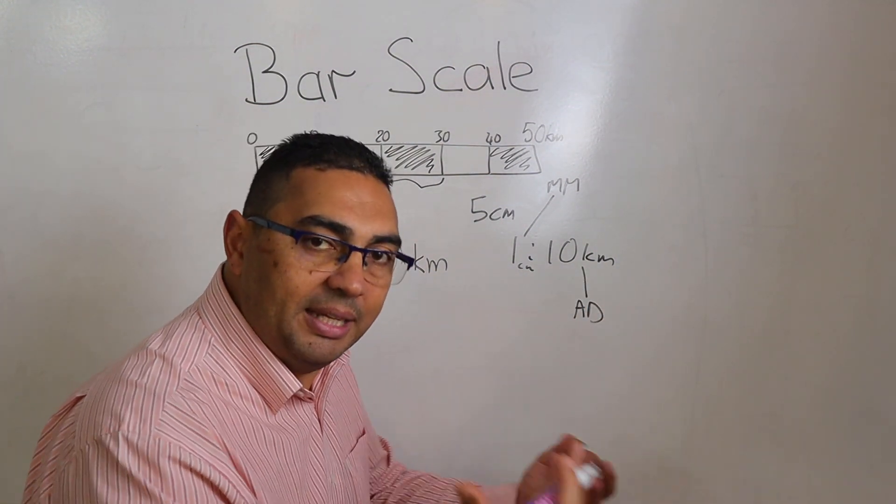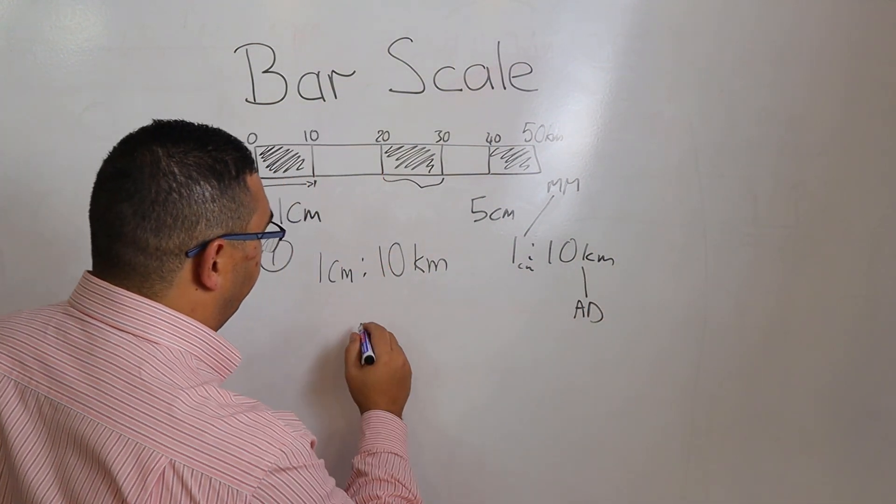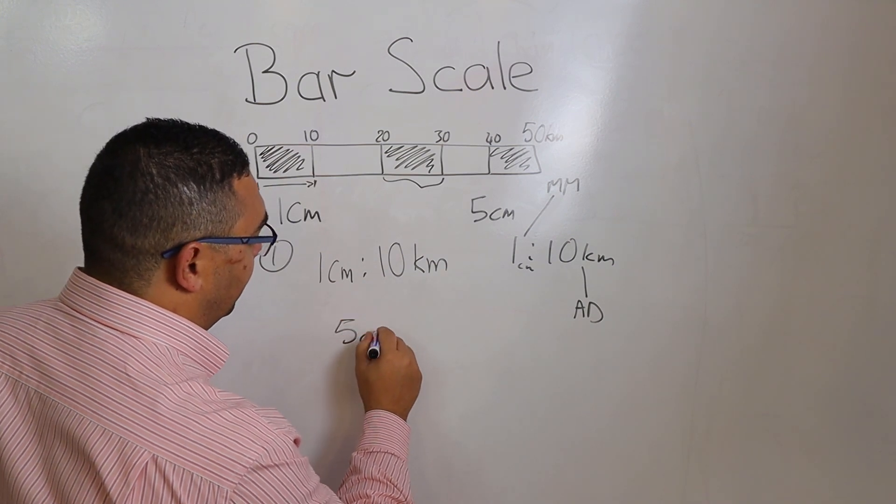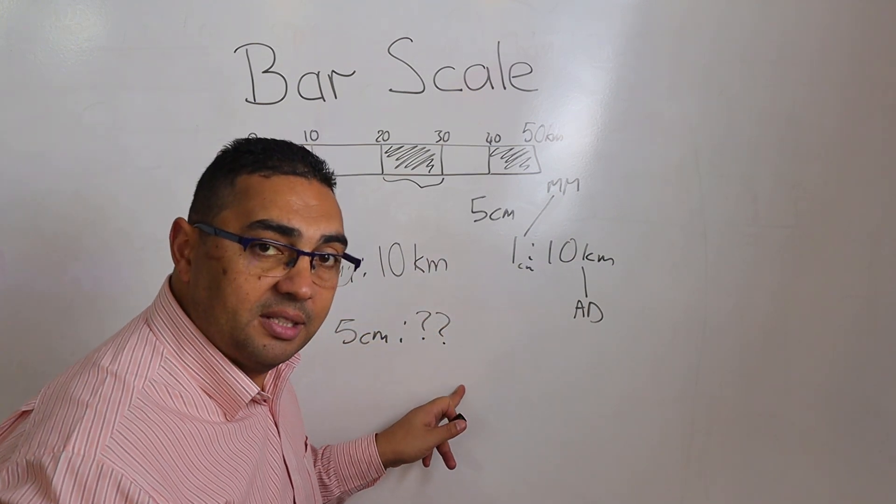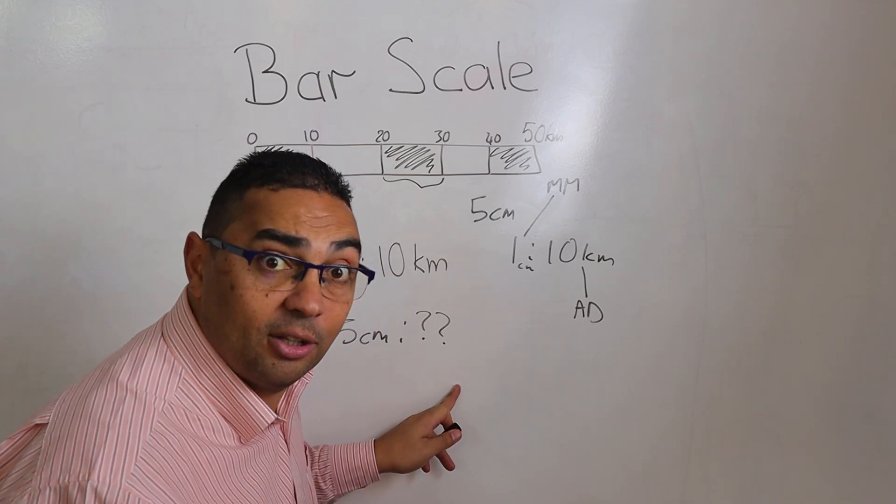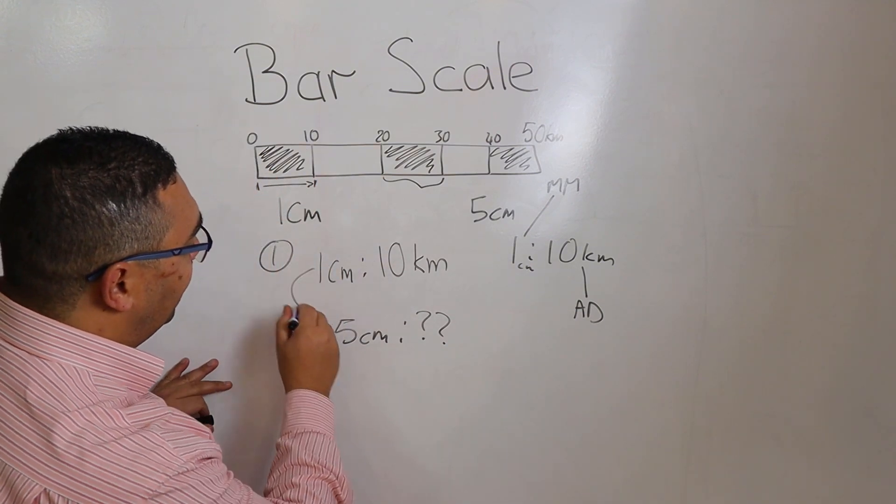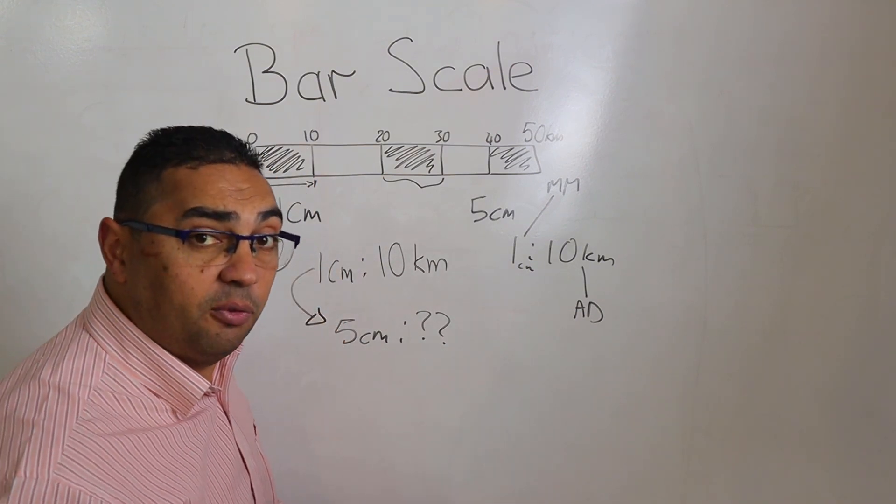Now, what have I been given? I've been given the map measurement. So 5 centimeters, but I don't know what the actual distance is. That's why I'm doing this calculation.